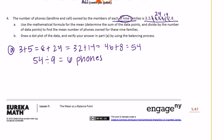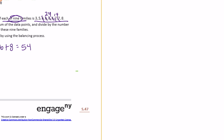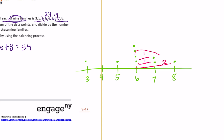Part B: draw a dot plot of the data and verify using the balancing process. The data ranges from three to eight — one three, one five, four sixes, two sevens, and one eight. From six to eight the distance is two, and from six to seven is one — total right-side distance is four. From five to six is one, and from three to six is three — total left-side distance is four. Since four equals four, the distances are balanced and the mean is confirmed to be six.